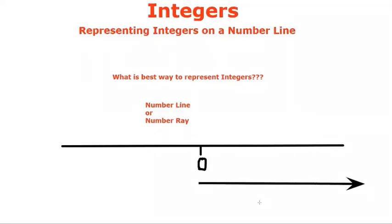Towards the right we have positive integers, which are 1, 2, 3, 4, and 5. These are the positive integers.